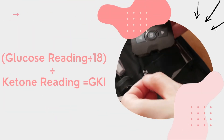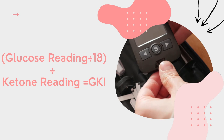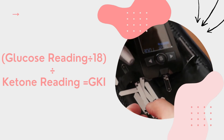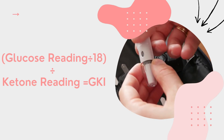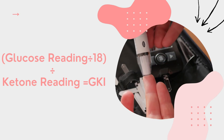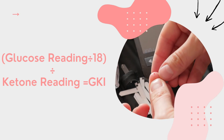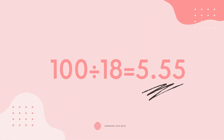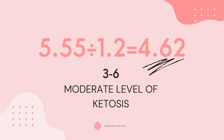So let's calculate our GKI. You need to take your glucose number and then your ketone number. Take your glucose, divide it by 18, then take that result and divide it by your ketone number. For example, if my glucose levels are at 100, I divide 100 by 18 and get 5.55. If my ketone levels are at 1.2, I take 5.55 and divide that by 1.2, which gives me a GKI of 4.6.